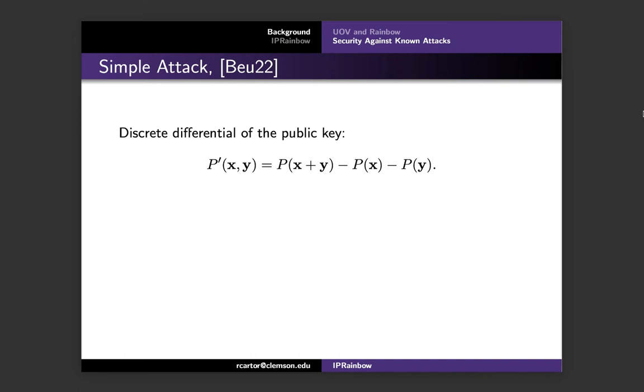So if p is a quadratic function, p prime will now be a bilinear function. It is also important to understand the structure of nested subspaces involved in the rainbow public key. The top line gives us a sequence of nested subspaces within the input space Fq to the n, and we see that the layer 2 oil space is a subspace of the layer 1 oil space, which is all a subspace of Fq to the n. We know that if we were to evaluate the public key at a point in the layer 2 oil space, that would be equal to zero. And if you want to visualize that, you can visualize our block matrices with only non-zero coordinates in the bottom of the x vectors.